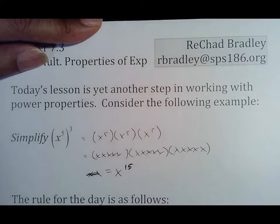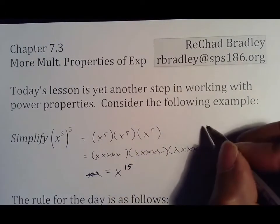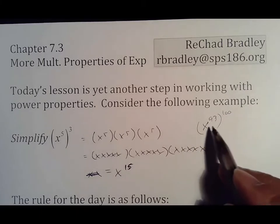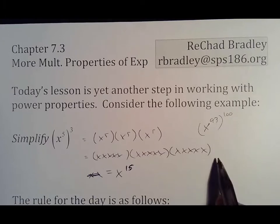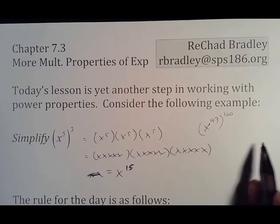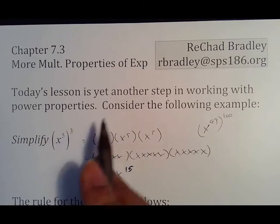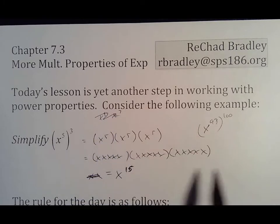Using your common sense here, how do you think we could take a shortcut? Because if I gave you x to the ninety-third to the hundredth power, you don't want to put a hundred of these and then put 93 in each one. There has to be a faster way. Five plus three is not fifteen, so that rule is not it.